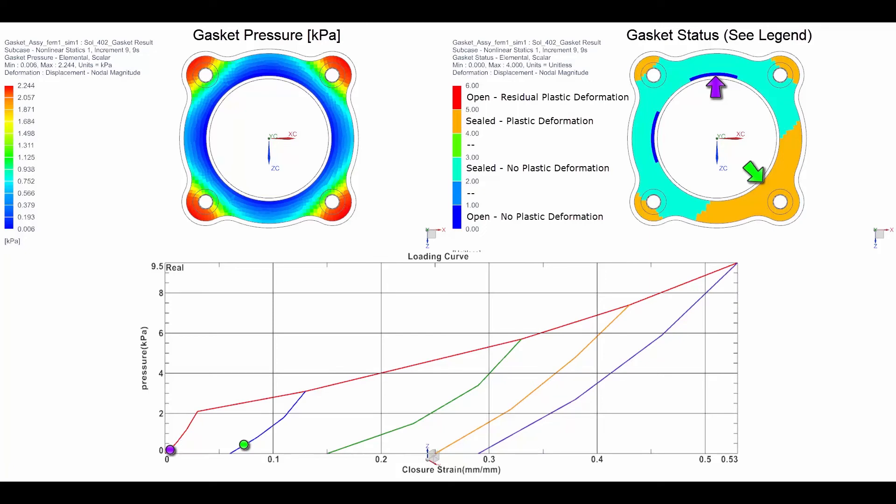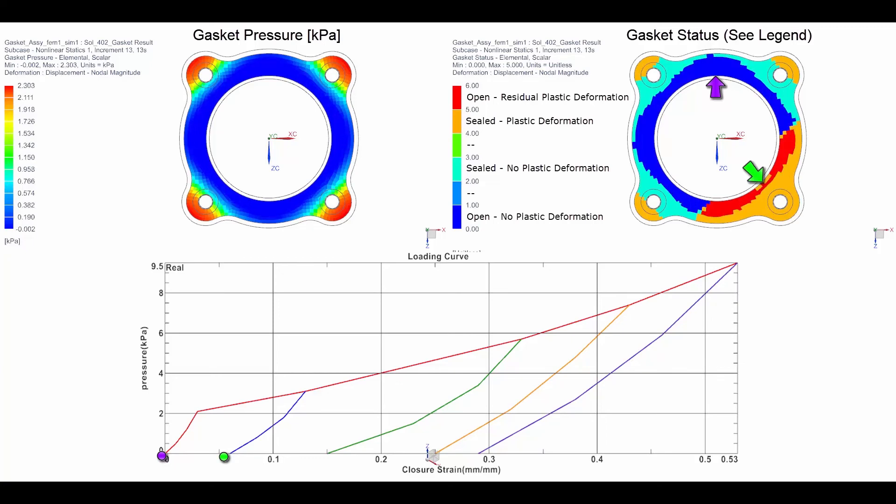When the working load gets higher, the purple area reaches a pressure of 0 kPa and the gasket becomes open without plastic deformation since the strain is 0. Then, the green area reaches 0 pressure and the gasket becomes open with residual plastic deformation since there is residual strain in this area.